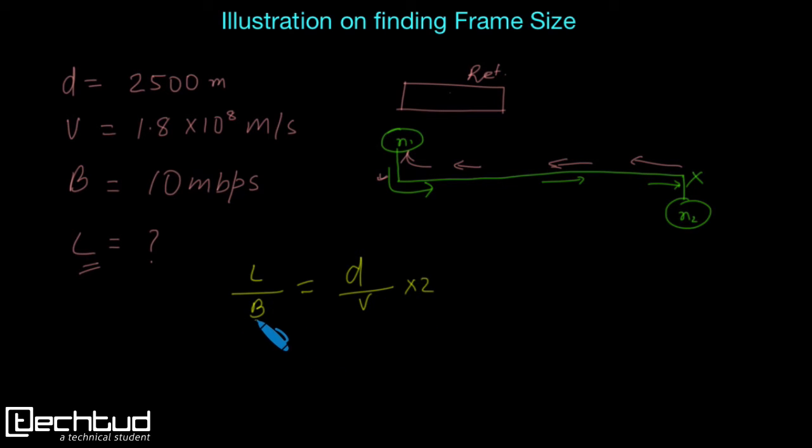So let's solve it. So it would be L equal to 2D upon V, and 2dB, right? 2dB upon V.